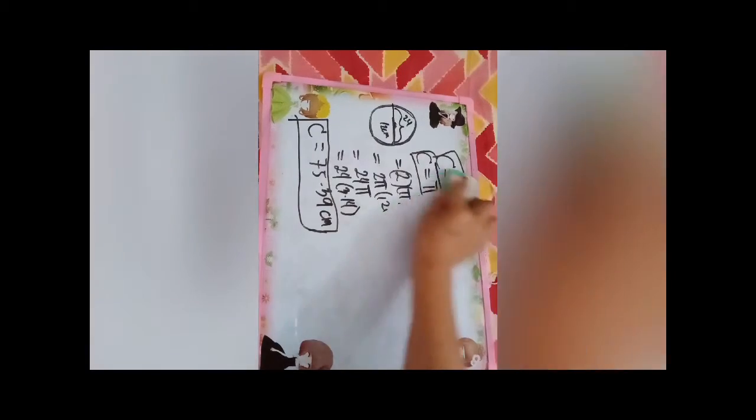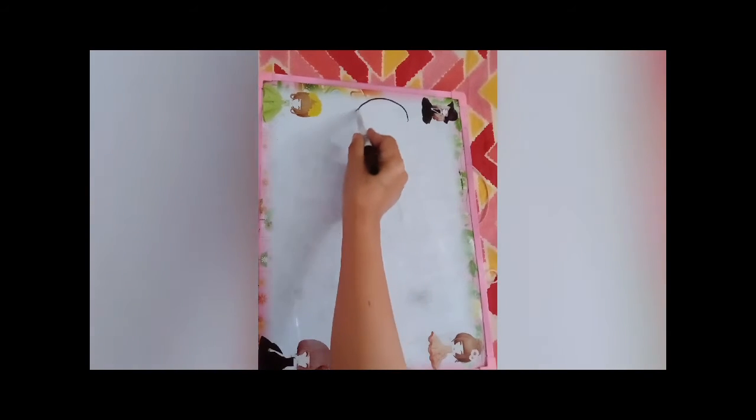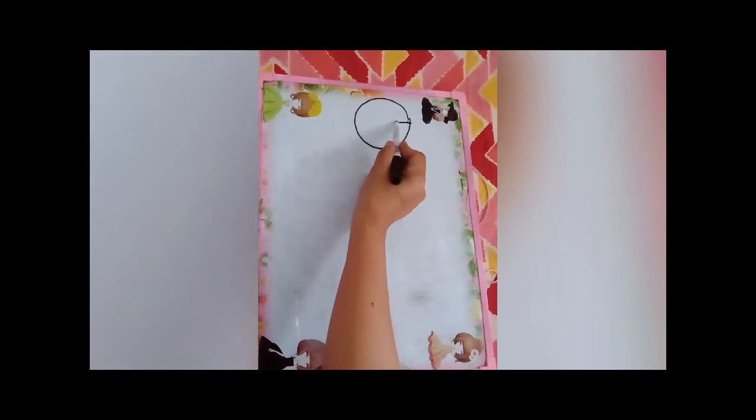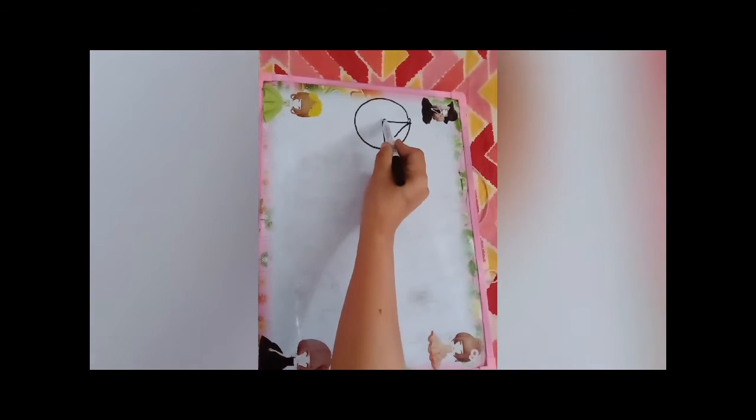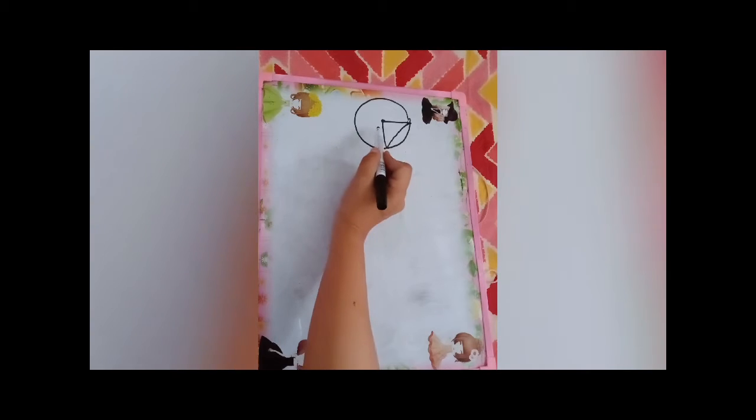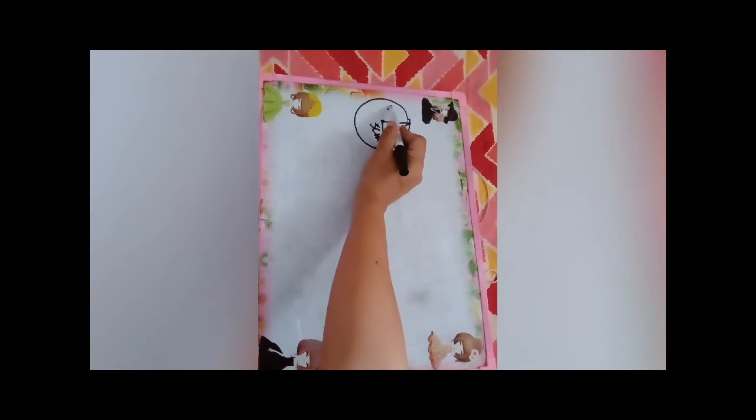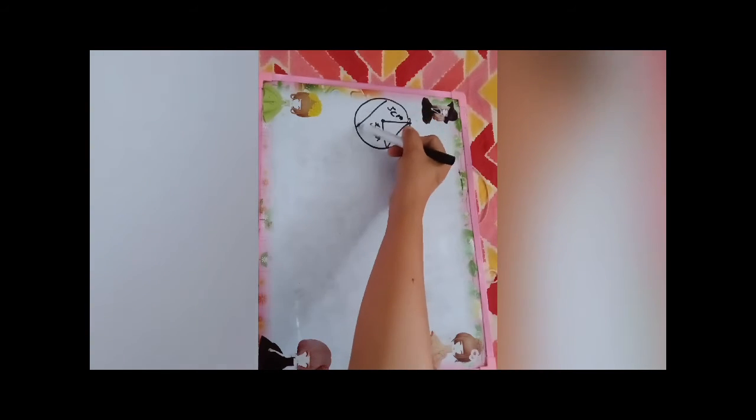Next, how to find the area of a shaded region. This is a circle. Inside the circle is a triangle. The base of the triangle is 5 cm, and the height of the triangle is 5 cm. So this is the shaded area.